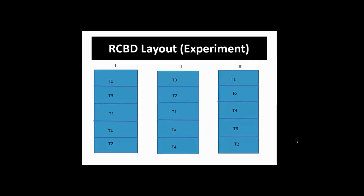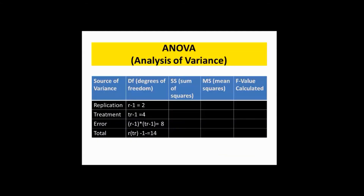This is the layout of the experiment. You will see that this is Block 1, Block 2, and Block 3, representing three replicates. The different treatments are randomly assigned to different subplots within the block. This is the model of the analysis of variance, which is the basis for computation of whether your data is significant or not. We have the source of variation, degrees of freedom, sum of squares, mean squares, and F value calculated.